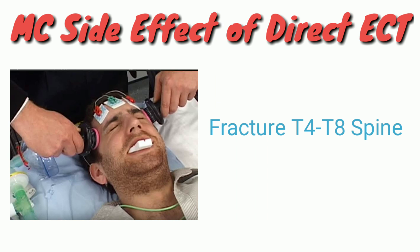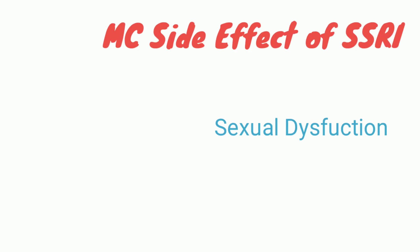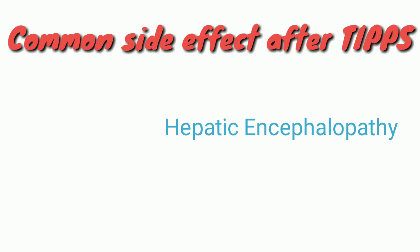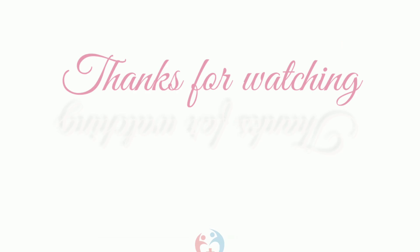The most common side effect of modified ECT is retrograde amnesia; modified ECT is safer than direct ECT. The most common side effect of SSRIs — selective serotonin reuptake inhibitors — is sexual dysfunction. The common side effect after TIPSS — transjugular intrahepatic portosystemic shunt — is hepatic encephalopathy. The adverse effect of chorionic villus sampling is oromandibular limb hypoplasia.